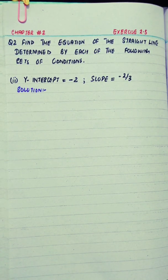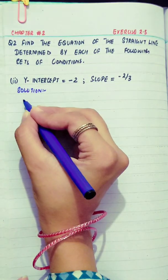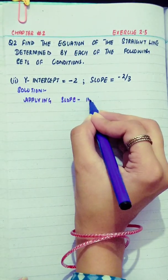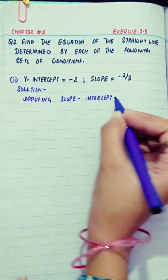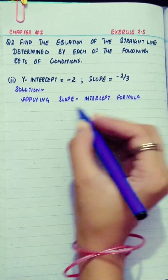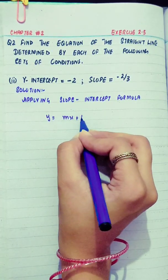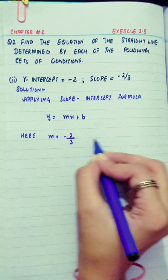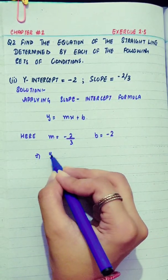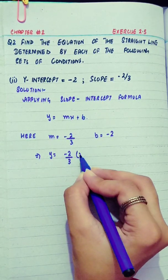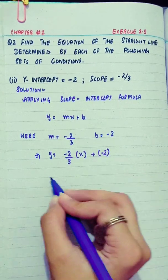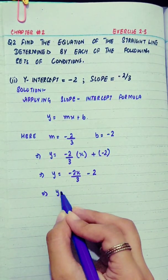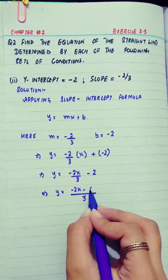Now we have y-intercept and slope, so we will apply the slope-intercept formula: y equals mx plus b. Here m is minus 2 by 3 and b is minus 2. Substituting values: y equals minus 2x over 3 minus 2.